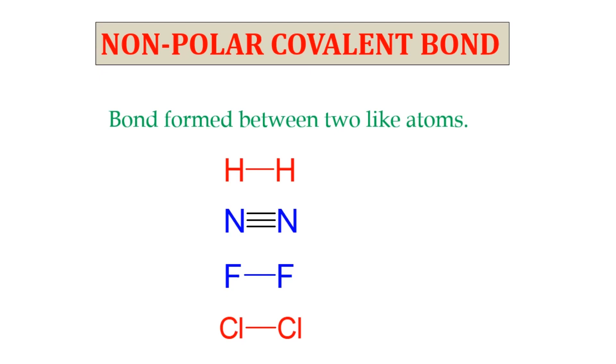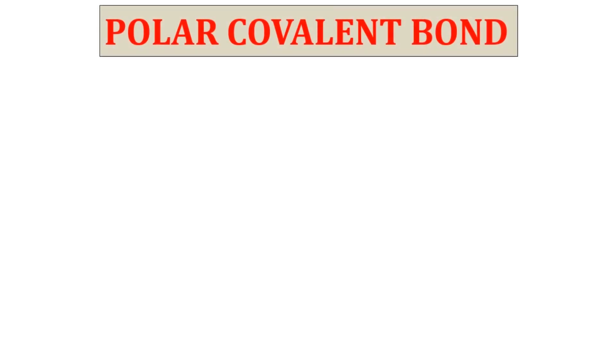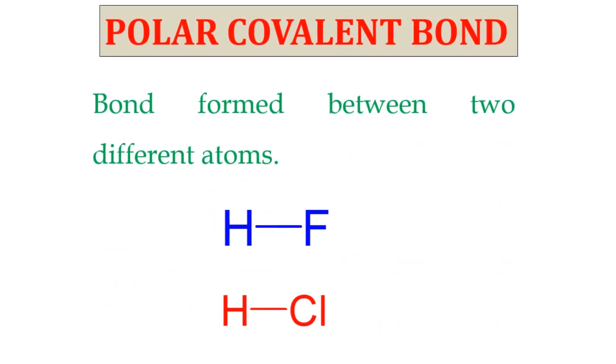Examples: hydrogen, nitrogen, fluorine and chlorine molecules. Polar covalent bond: A covalent bond formed between two different atoms is known as polar covalent bond. Example: HF and HCl.